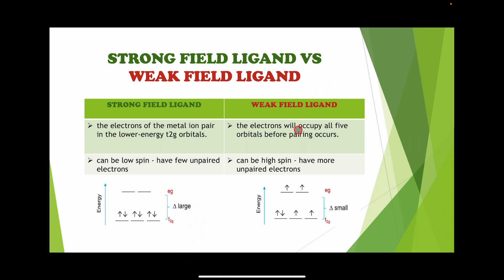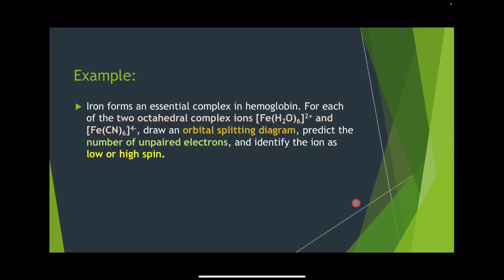Compared to the weak field ligand, the electrons will occupy all five orbitals before pairing occurs. For example, with a 3d⁶ configuration, you fill 1, 2, 3, 4, 5, and then 6, occupying all five orbitals before pairing. Weak field ligands can be high spin, having more unpaired electrons.